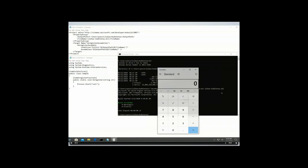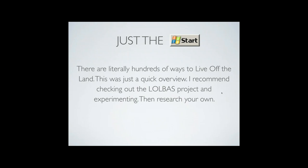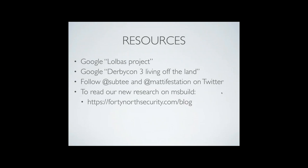That's an example of digging into the MSBuild binary a little extra, looking through documentation, and finding something new. I encourage all of you to do that as well — there are so many binaries you could do this with. In terms of resources: the LoLBAS project is number one. DerbyCon 3 'Living Off the Land' is kind of the seminal talk of the modern era on this. If you're going to follow two people on Twitter, I'd recommend Casey Smith at SubTee and Matt Graber at Manifestsec. Our new MSBuild bypass research is at FortyNorthSecurity.com/blog.